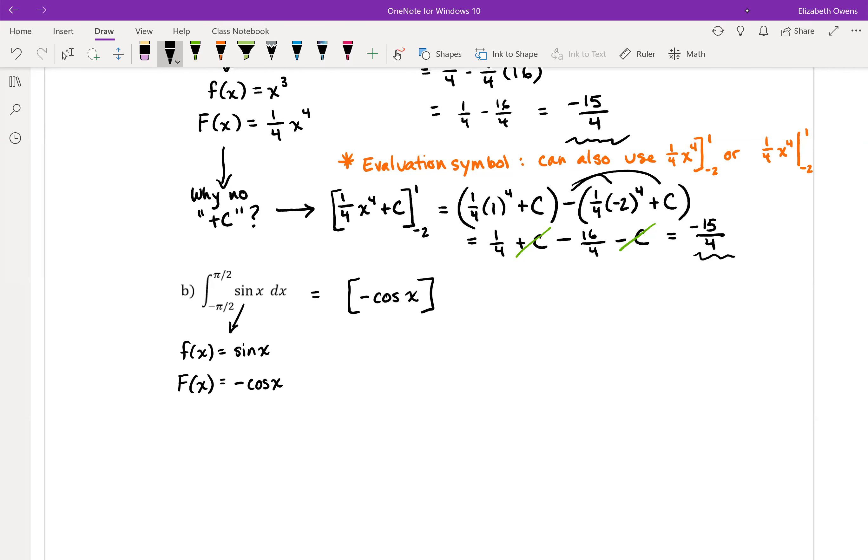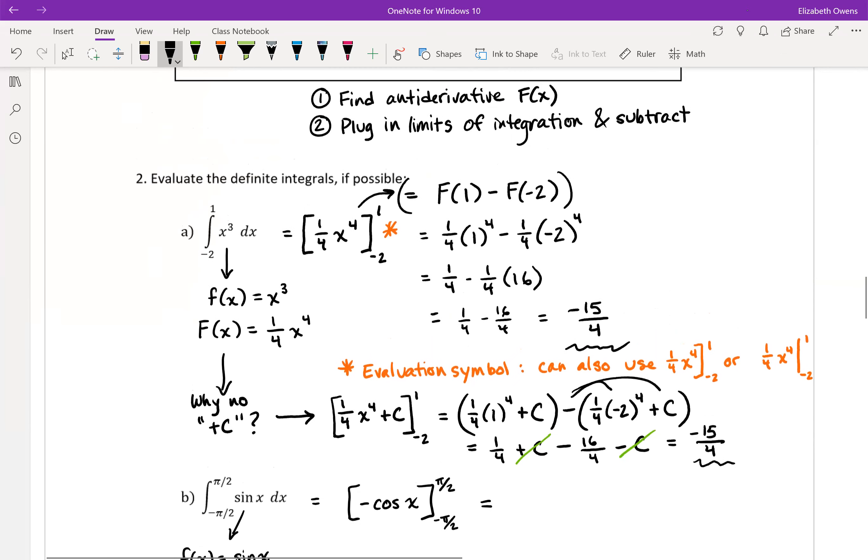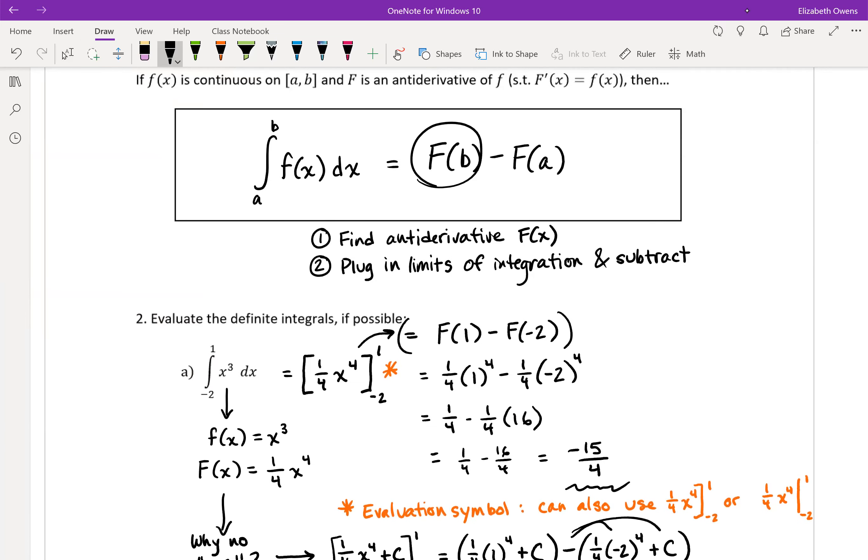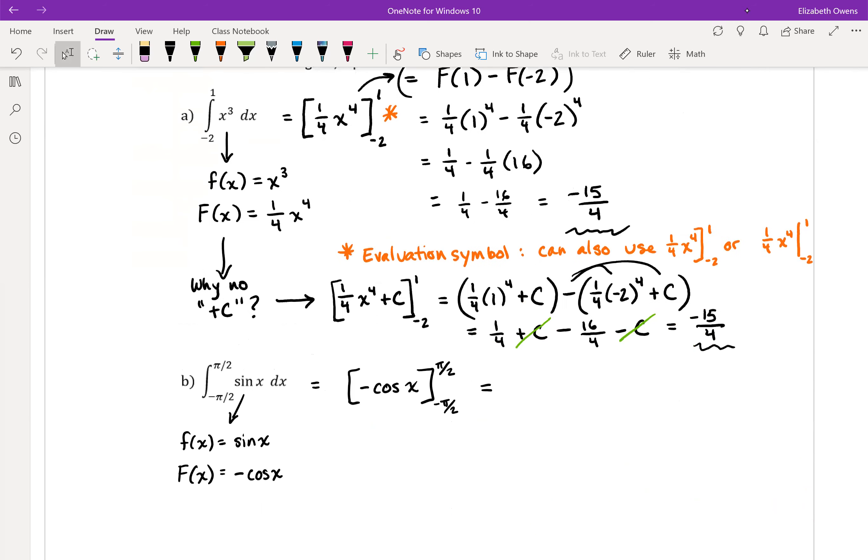Negative cosine x, and put in our limits of integration, because we're about to plug those in. And remember our Fundamental Theorem says that we can plug the upper limit into the antiderivative, and then subtract and plug the lower limit into the antiderivative.